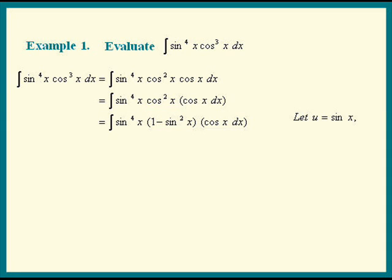If u is sine x, du is cosine of x dx. The integral now looks like the integral of u to the 4th times 1 minus u squared times du.